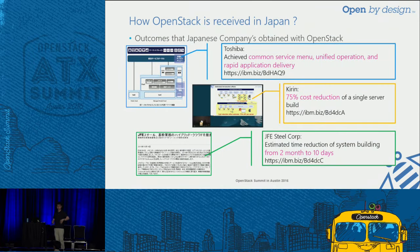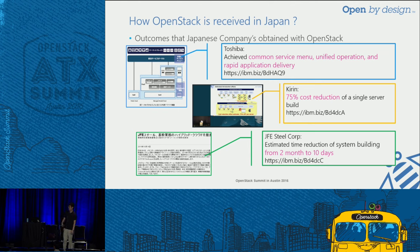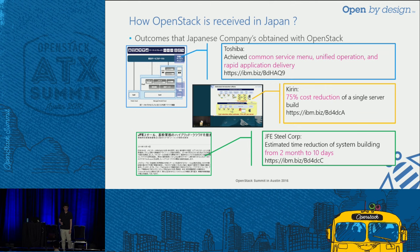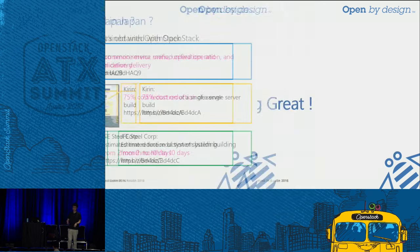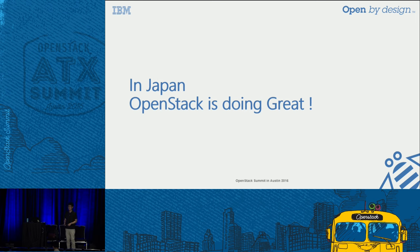You may wonder what clients are really getting from OpenStack. Toshiba built a service menu on top of OpenStack and achieved flexibility and rapid deployment. Kirin reduced their single server costs by 75%. JFE Steel Corporation is estimating their system build time will reduce from 2 months to 10 days — about 80% reduction. You can see that a lot of our clients are getting positive outcomes from OpenStack, and I feel that many clients are really getting interested in this technology.